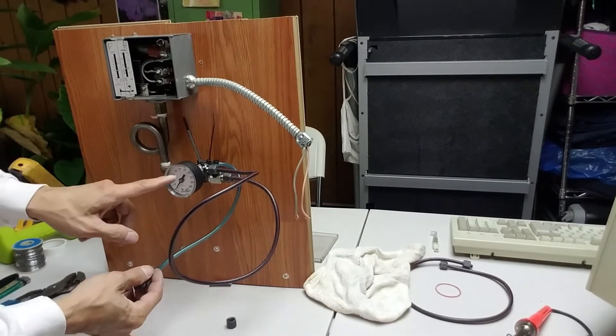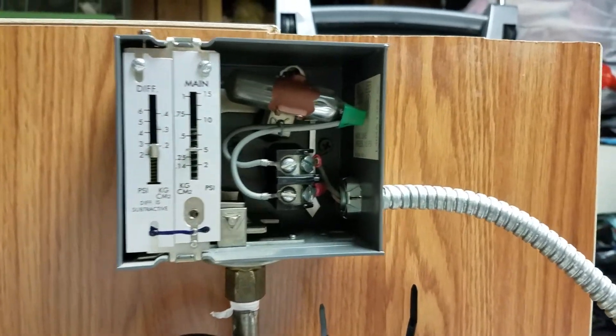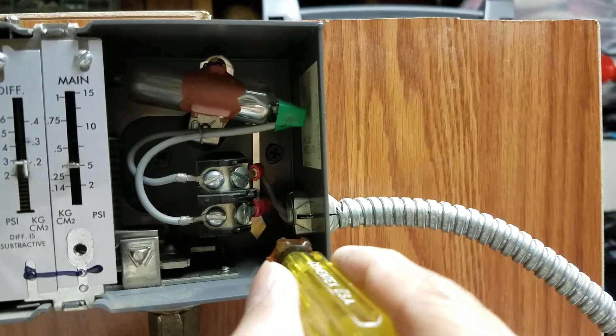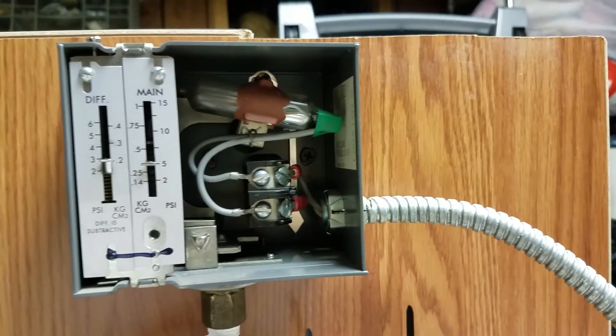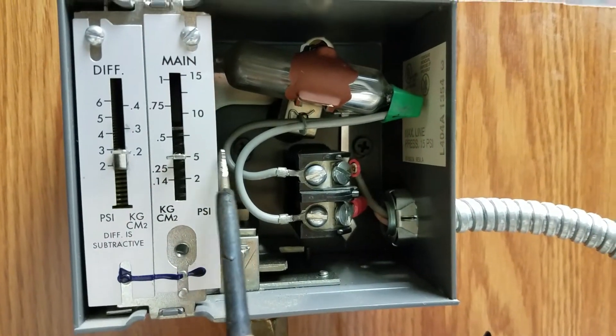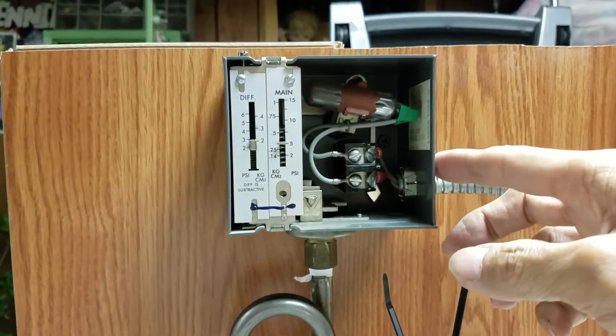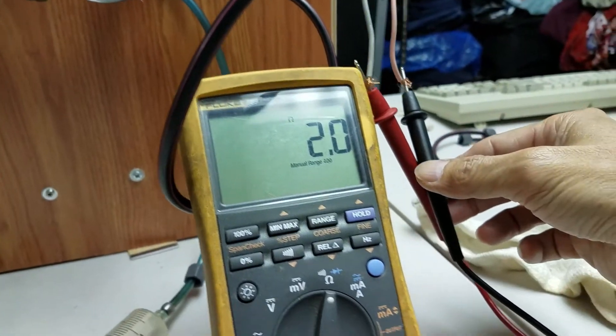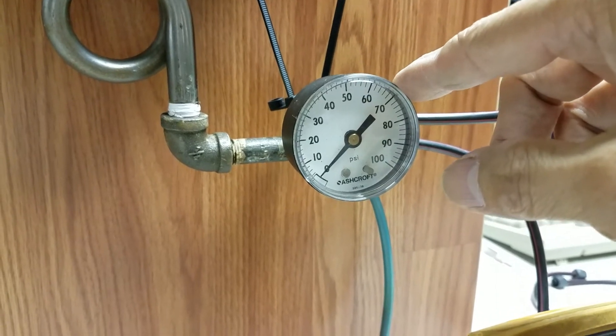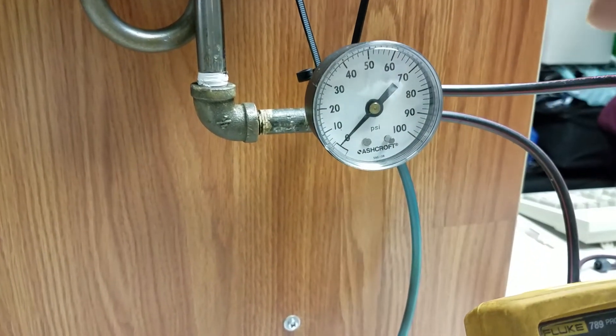I remount the pressure gauge. If you don't have the level adjustment for perpendicular to the horizontal, you can look inside of the switch, it has a little balancer. You can follow this. The main set at 5 psi. And the differential is 0.2 psi.